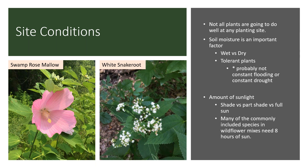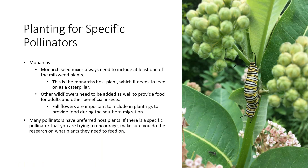Another important site condition is knowing how much sunlight that area gets — shade, part shade, or full sun — as this is important for choosing which plants are adapted for that location. Many of the commonly included species in pre-made wildflower mixes need at least eight hours of sun. A good example of a more shade-loving plant would be white snakeroot, which would do well there but probably not in really full sun for the majority of the day.